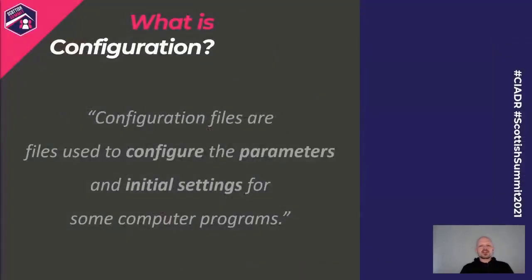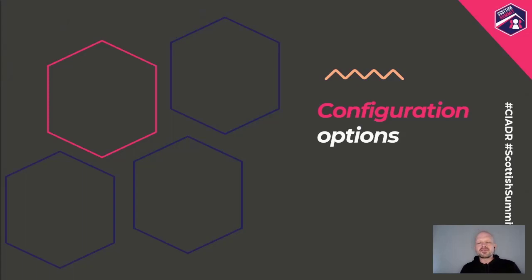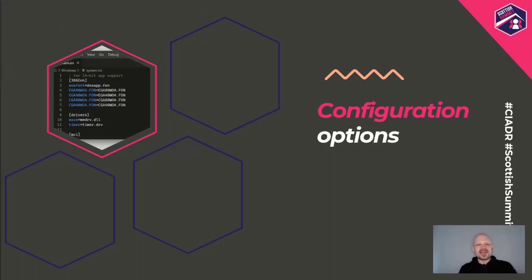Let's start with what exactly is configuration. Configuration files are files used to configure the parameters and initial settings for some computer programs — that's what makes your application run the way it should. Looking at the different types of options we have for configuration, way back when — and I actually worked with these myself — we had INI files. INI was probably short for initialization. These INI files had groups or categories between square brackets, and then settings below that.